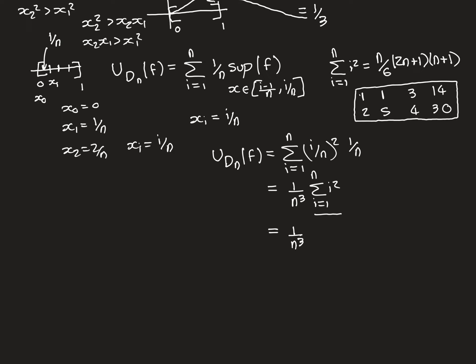After cancellation — since n is never 0 — the upper Riemann sum simplifies to (1/6)(2 + 1/n)(1 + 1/n). This is the value of the upper Riemann sum for one of these equally spaced dissections with n pieces. It's a function of n, so you simply plug in your chosen n. For example, if n = 20, you've divided [0, 1] into 20 equal pieces and this formula gives the corresponding upper Riemann sum.